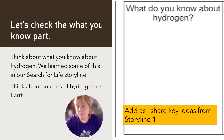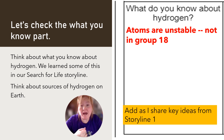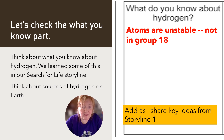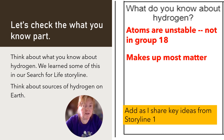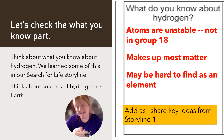Alright, it's time to check the 'what you know' part. Add these ideas from Storyline 1 if you don't already have them. Atoms are unstable — not in group 18, though. Hydrogen is not in group 18, so it is unstable as an atom. That means it's trying to fill its valence shell of electrons. Hydrogen actually makes up most matter — it's really common in the universe. But it may be hard to find as an element; it was found in a lot of compounds, but not talked about much as a pure element.